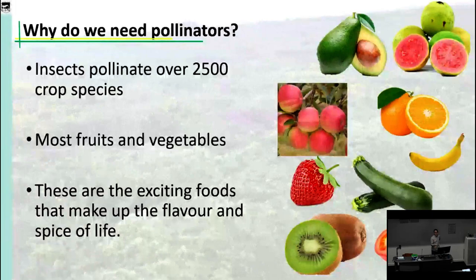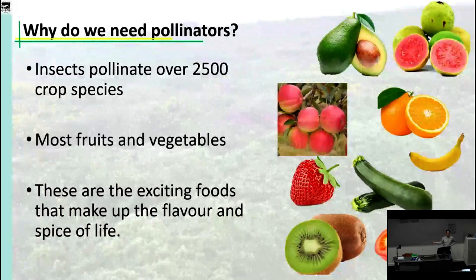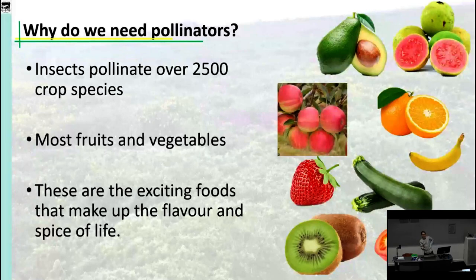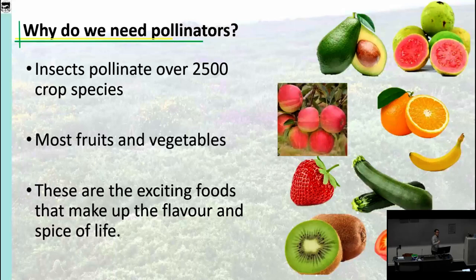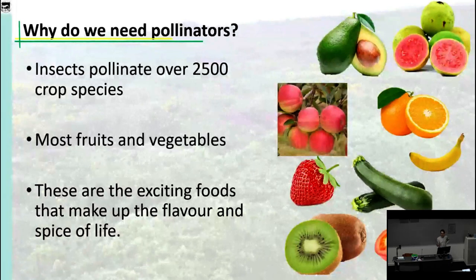Have you seen those ludicrous adverts for Huel, the food substitute? Imagine that for the rest of your life you have to consume that gray, sloppy gruel. That is the world without insect pollination: no flavor, nutrients yes, but nothing that actually has any taste to it. That's why we care about pollinators. We will survive — we'll just have a miserable existence without them.